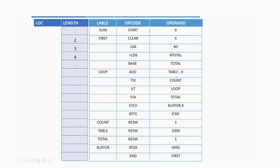For 'ADD TABLE,X', there are two operands where one operand is a label and the other is a register. If both operands were registers it would be Format 2, but since one is a label and the other is a register, it is a Format 3 instruction — length 3 bytes. 'TIX COUNT' is again Format 3 — length 3. 'JLT LOOP' is Format 3 — length 3.